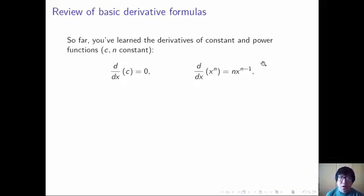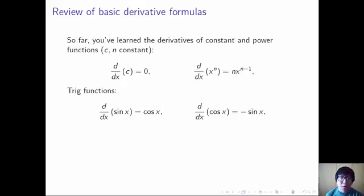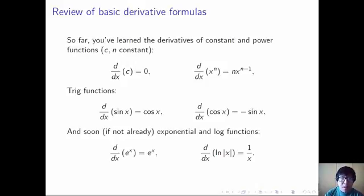So for review, you've learned that the derivative of a constant is 0, and the derivative of x to the n is n times x to the n minus 1. That is, you take the exponent and pull it down and subtract 1 from the exponent. You've learned that the derivative of sine is cosine, and the derivative of cosine is negative sine. And soon, if you haven't already, you will learn that the derivative of e to the x is e to the x, and the derivative of the natural log is 1 over x.